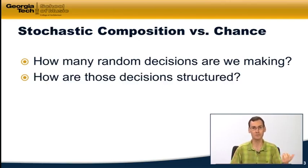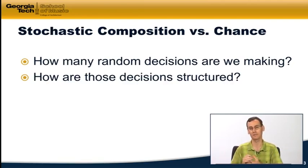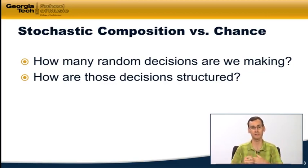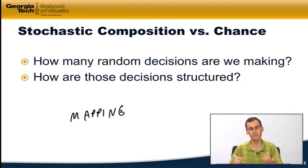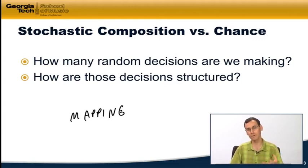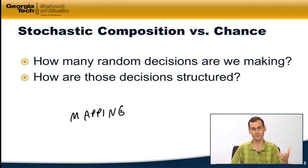The other thing to consider is how those decisions are structured. Are we blindly taking random numbers and feeding them into function arguments or effect values? Or are we thinking carefully about the mapping — how we're taking this and bringing it in in a musically sensible way that supports what we're trying to do? We're going to walk through both of these as we refine the example from the last video, making it more stochastic and less chance composition.